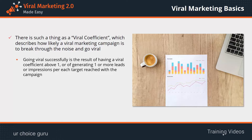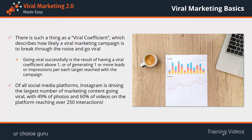If the viral coefficient is below one, it means that viral sharing is diminishing and that the viral campaign needs to be optimized. Of all social media platforms, Instagram is driving the largest number of marketing content going viral, with 49% of photos and 60% of videos on the platform reaching over 250 interactions.